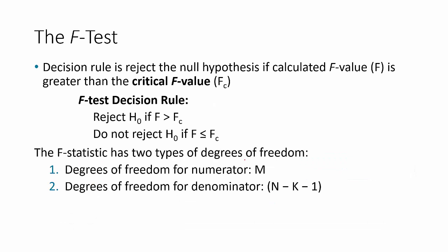The decision rule for this test requires us to compare the F-statistic we just calculated with a critical value from the F-distribution that we'll calculate using F.INV.RT in Excel, or draw from the F-table. The decision rule functions just like every other decision rule: if your F-score is outside of your F-critical value, you will reject the null. Otherwise, you will fail to reject the null.